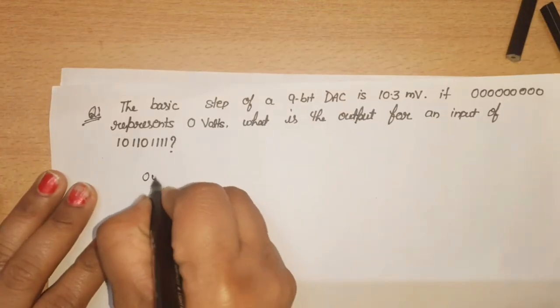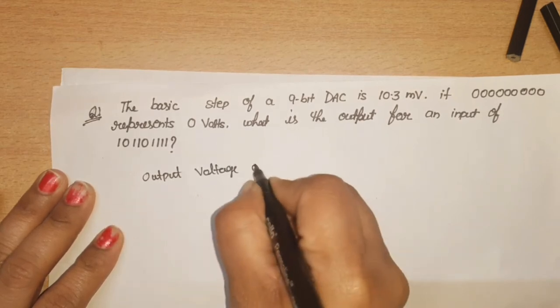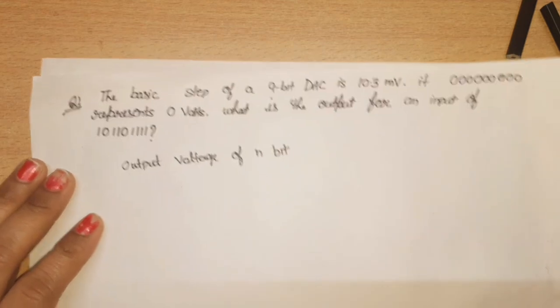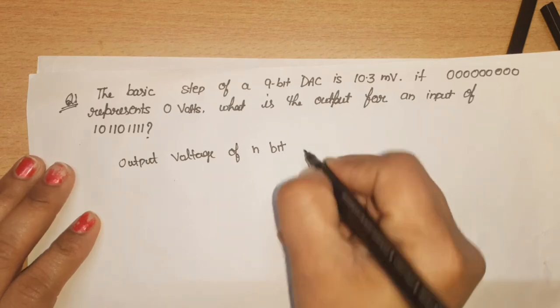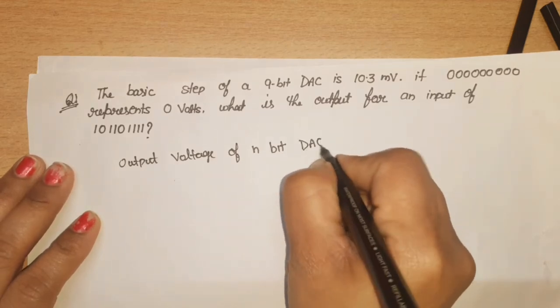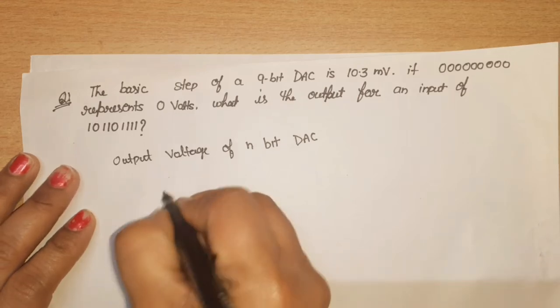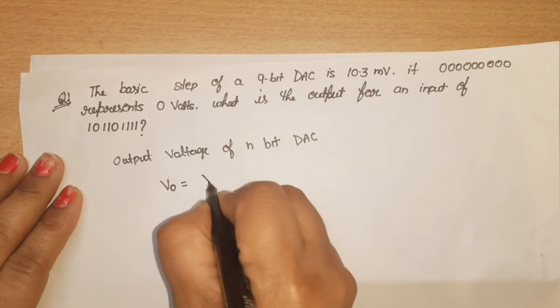First, output voltage of N-bit. N-bit means that if it is 4-bit or 5-bit, then you can calculate using the same formula to calculate N-bit DAC. DAC means digital to analog converter. Your input will be a digital bit sequence and output will be analog output.